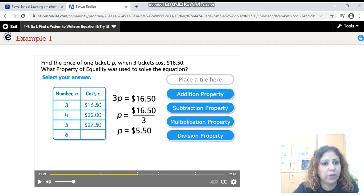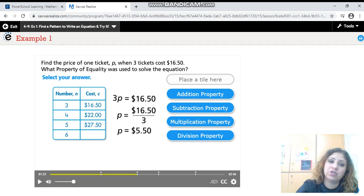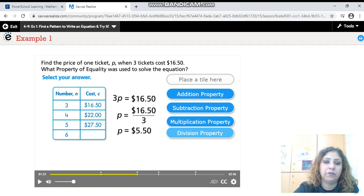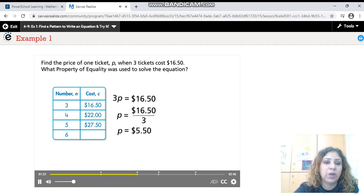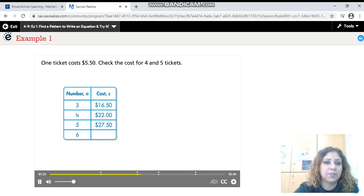If you multiply the three by the price of one of the tickets, that equals $16.50. We need to solve this multiplication equation by using the inverse operation of multiplication, which is division property of equality. This way I can divide both sides by three and this way I can get the price of one ticket. One ticket costs $5.50.